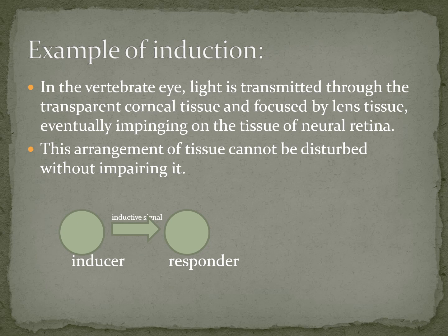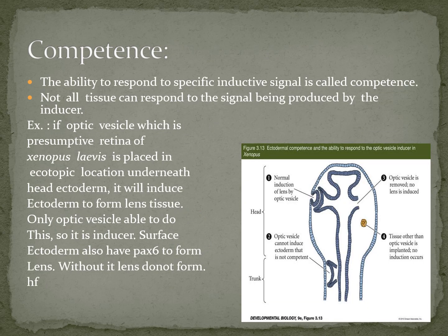This arrangement of tissues cannot be disturbed without impairing it. In a diagram showing induction, there are two cells — the inducer and the responder — with inductive signals passing between them. The ability to respond to a specific inductive signal is called competence.